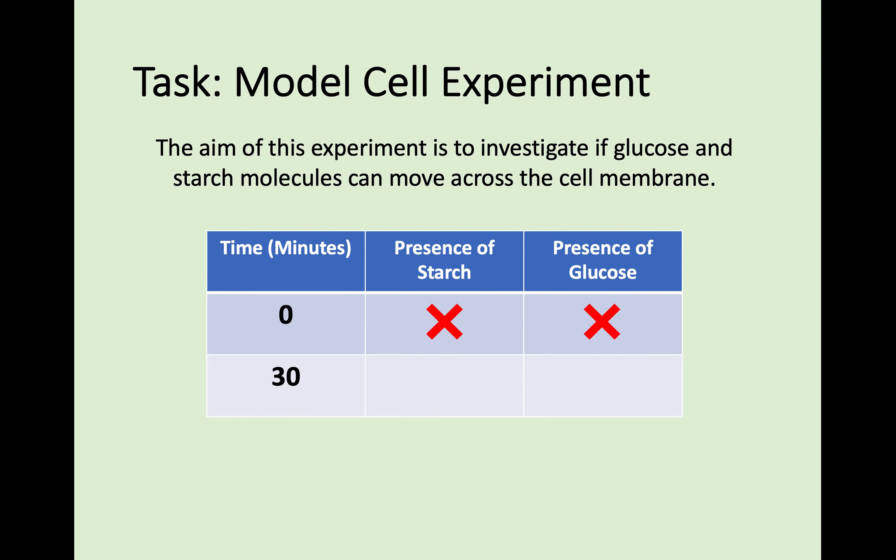However, as time moves on something changes. You'd still find no starch in the water, but you would find a trace of glucose in the water — the glucose has moved through the selectively permeable membrane. The starch has not moved through, because starch molecules are too large to pass through the selectively permeable membrane. This illustrates how some molecules can move through the membrane but some cannot.